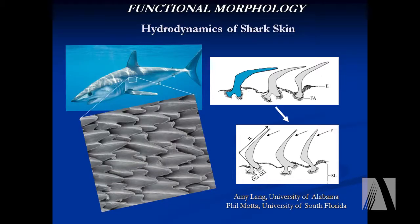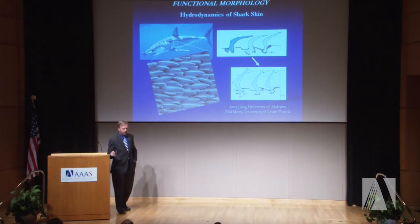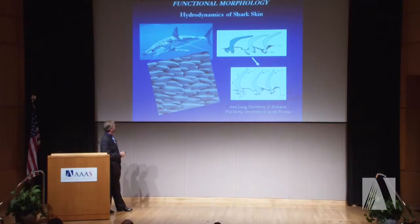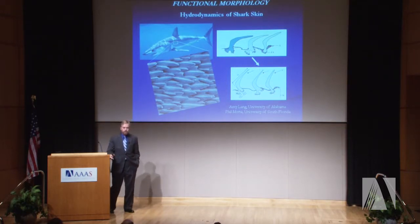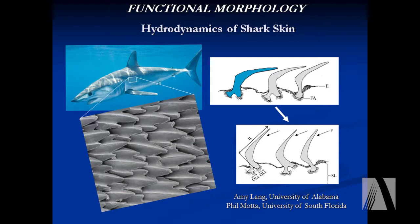Moving to the outside of the shark — shark skin. A shark's skin is very rough and composed of minute scales called dermal denticles: little teeth that point toward the back of the shark and have ridges on them. We've always thought shark scales were important for protection — like a suit of armor against injury and parasites — but recent research on the hydrodynamics of the skin is revealing some new wrinkles. This is work by Amy Lang, an engineer at the University of Alabama, and Phil Moda at the University of South Florida.